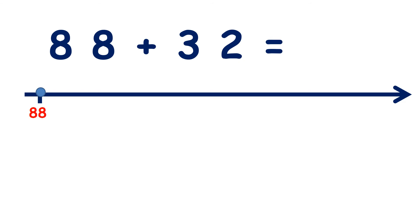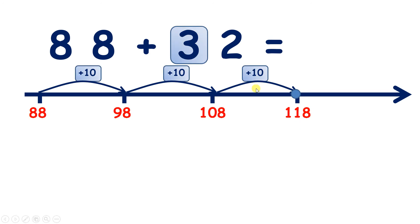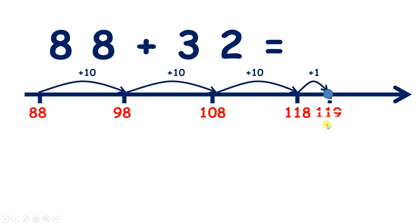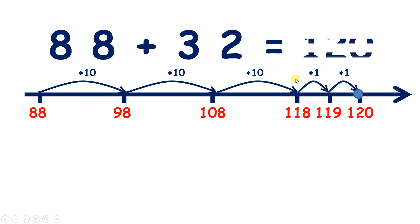Now pause the video and see if you can work out 88 plus 32. Adding 10 gives us 98, another 10 gives us 108, and a third 10 gives us 118. So we've added our 3 tens. Now let's add our two units by counting on two from 118: 119, 120 — so we've added two units to give us our answer 120.